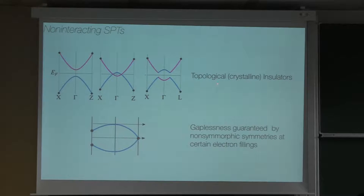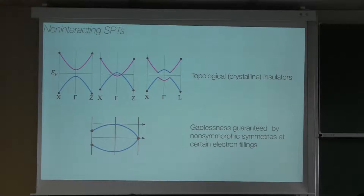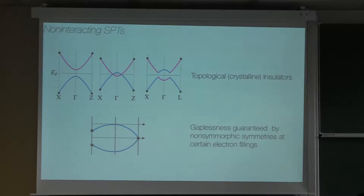With symmorphic symmetries, if you completely fill a band, you end up with an insulator. But with non-symmorphic symmetries, the normal filling rules fail, because we have sticky points in the band structure where there's a degeneracy protected by the non-symmorphic symmetry. What you get in these systems is gaplessness guaranteed by these non-symmorphic symmetries at certain electron fillings — so you have a half-filled band and it's gapless.